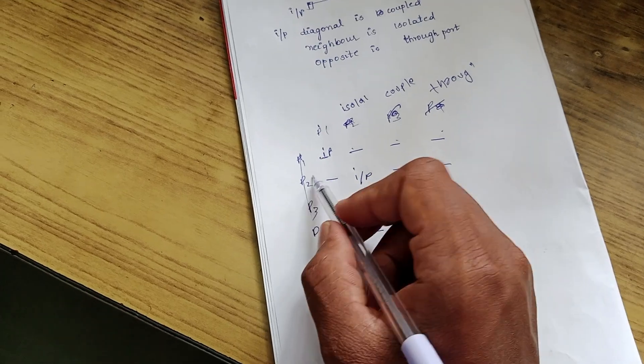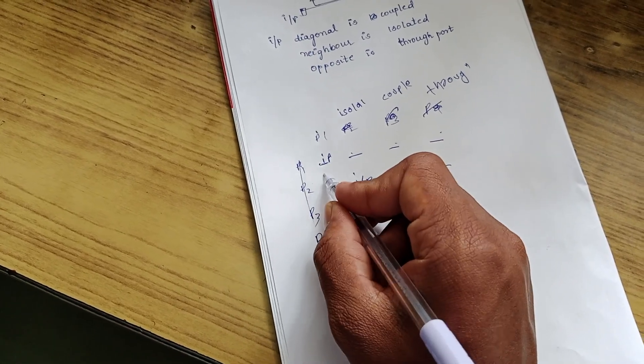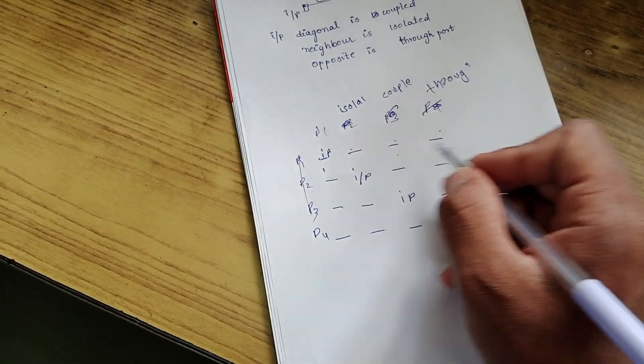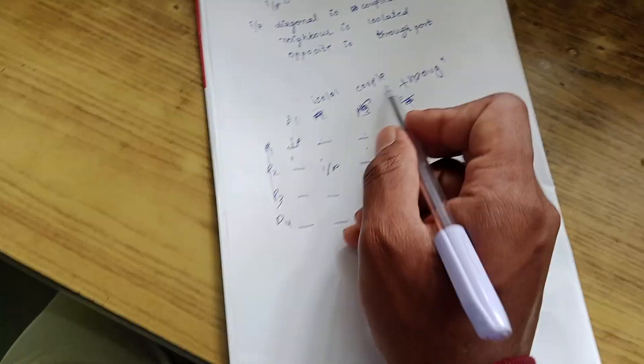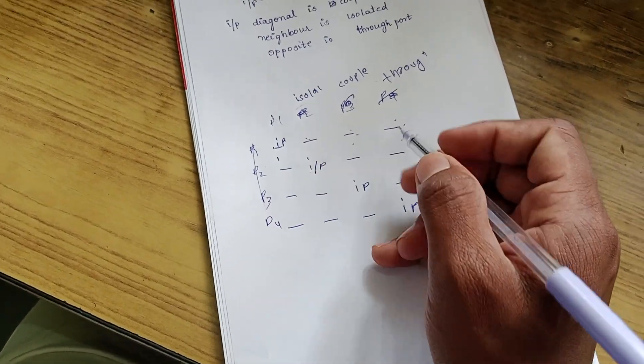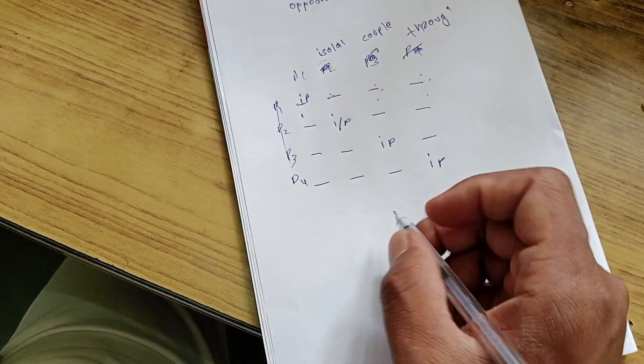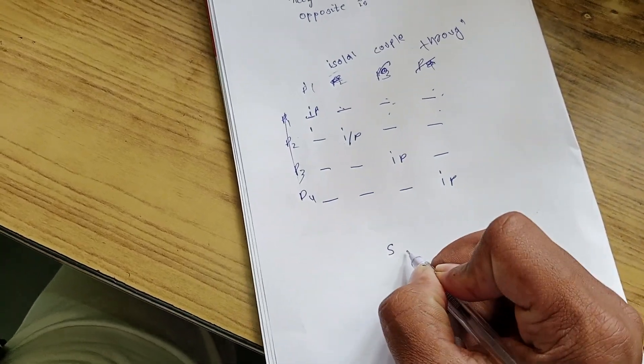If this is input, this will be varying. Like this might be the isolated, this might be the coupled and this might be the throughput. You keep this as constant and you can note down the current readings. Once you are done with this, you have to calculate the S matrix.